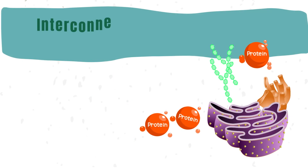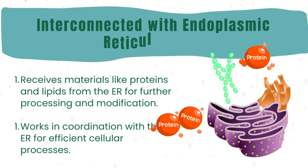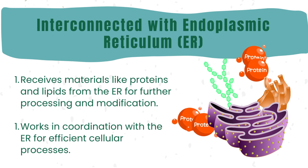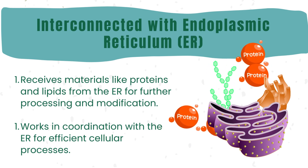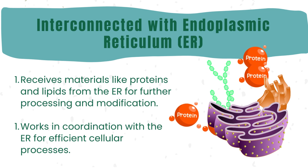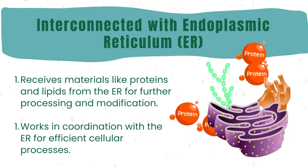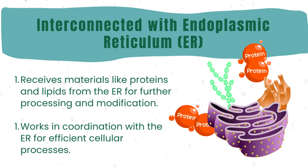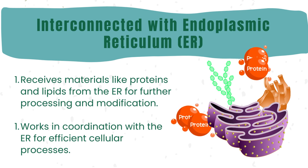The Golgi apparatus and the endoplasmic reticulum are closely linked. The Golgi apparatus receives proteins and lipids from the ER, where they undergo further processing. This tight coordination ensures efficient cellular processes and optimal functioning.